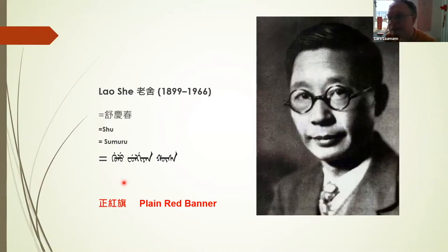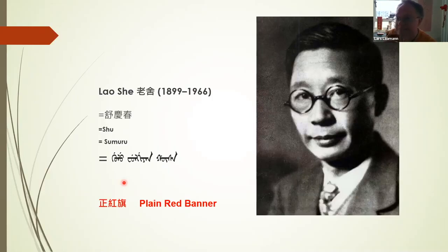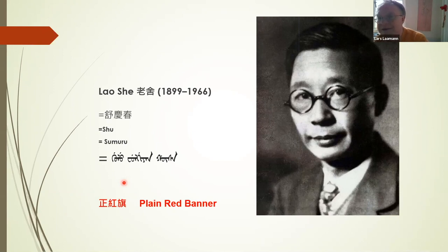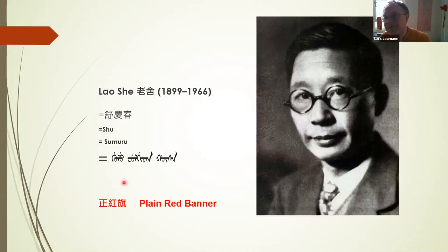You may have heard of Lao She — he lived in London for some time, and actually worked at SOAS for some time. He complained about being underpaid because he was Chinese, and complained about racism at the workplace. This was one of the reasons he ran out of money — another reason perhaps being that he lived in Notting Hill, the lower end of a very well-to-do area.